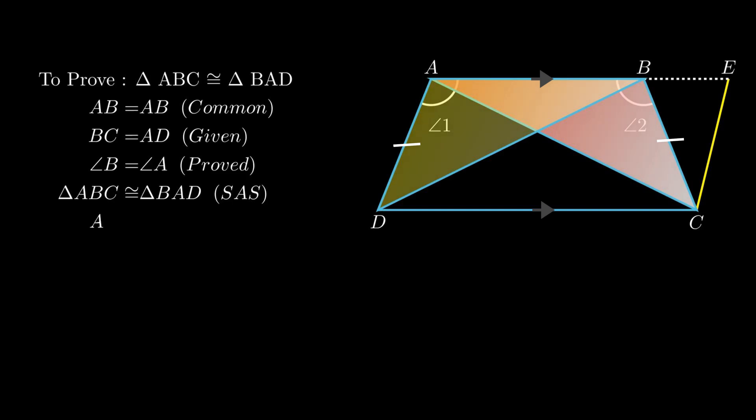As triangles containing the segment AC and BD are already proved congruent, by corresponding parts of congruent triangles, we conclude segment AC equals segment BD. So this was it for the video, see you in the next one, thank you for watching.